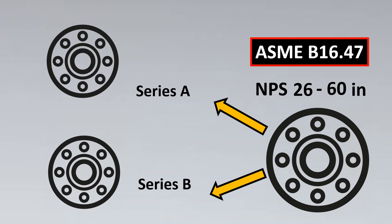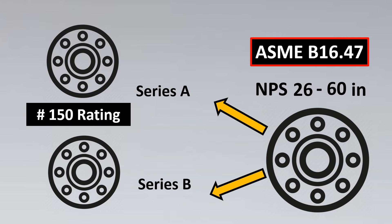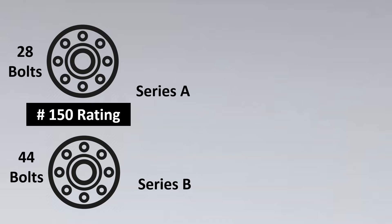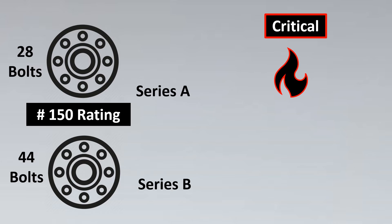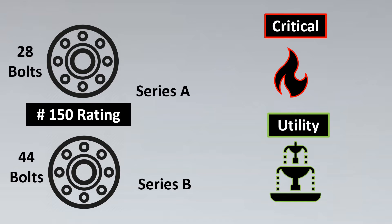Series A and Series B flanges are not compatible with each other. For example, for a 150 rating flange, Series A would have 28 bolts while Series B would have 44 bolts, so we need to be cautious about this. Generally, for critical lines you use Series A, and for non-critical lines like utility water you would use Series B flanges.